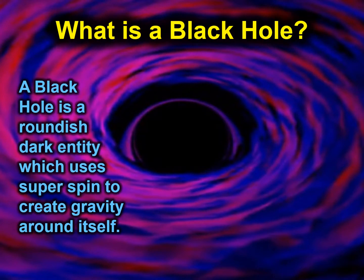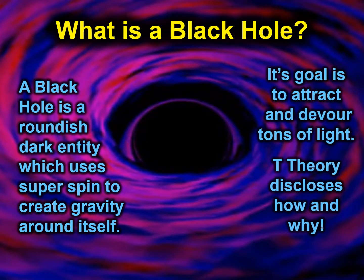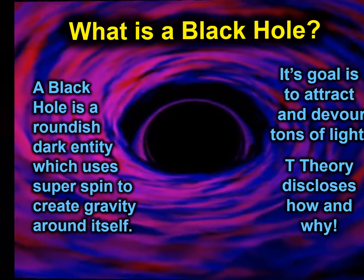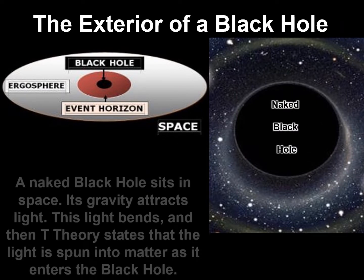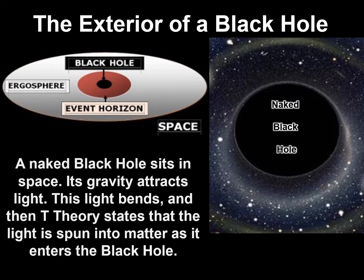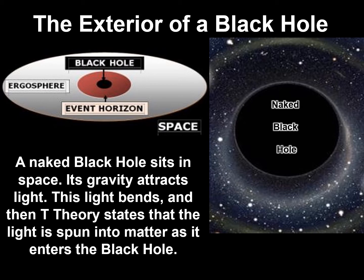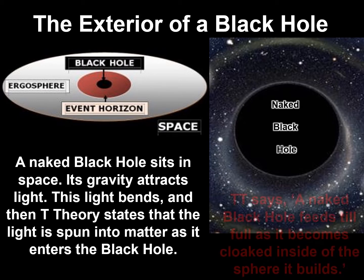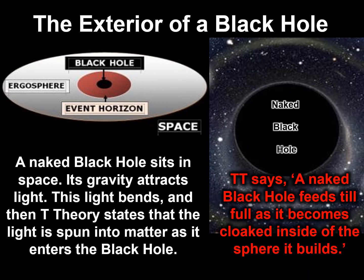A black hole is a roundish dark entity which uses super spin to create gravity around itself. Its goal is to attract and devour tons of light. Looking at the exterior of a black hole: it sits in space, its gravity attracts light, this light bends, and then Trillion Theory states that the light is spun into matter as it enters the black hole. A naked black hole feeds till full as it becomes cloaked inside of the sphere it builds.